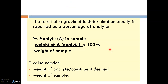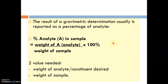The result of a gravimetric determination is usually reported as a percentage of analyte. The percentage of analyte in the sample equals the weight of the analyte divided by the weight of the sample, times 100 percent. Two values are needed in the calculation: the weight of the analyte and the weight of the sample.